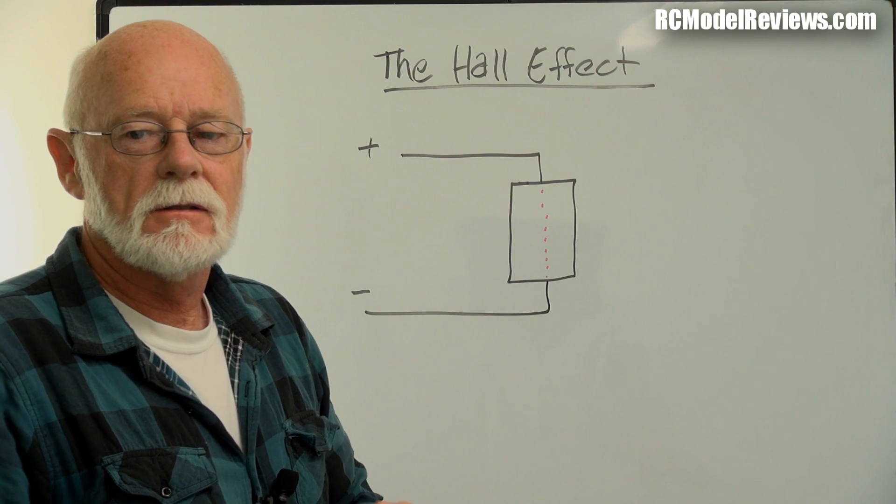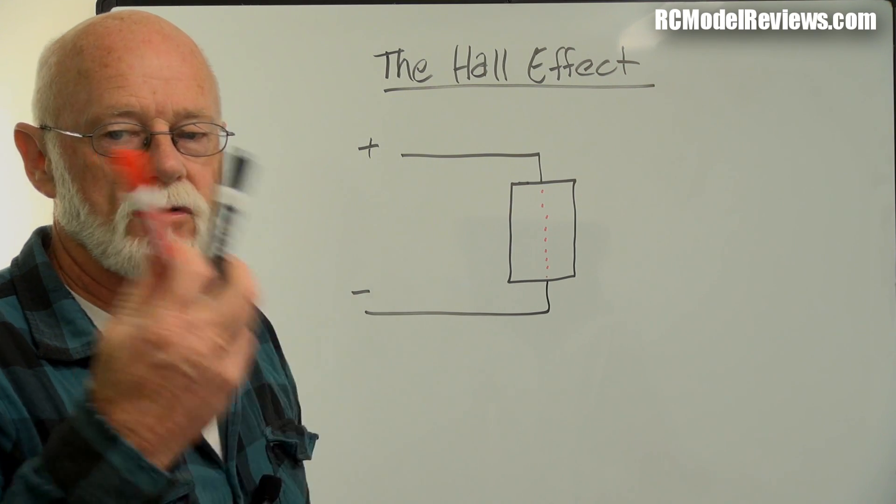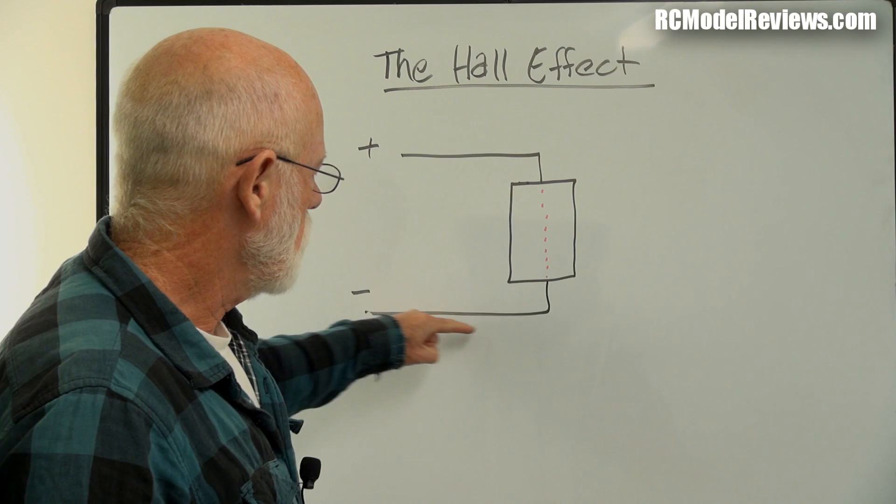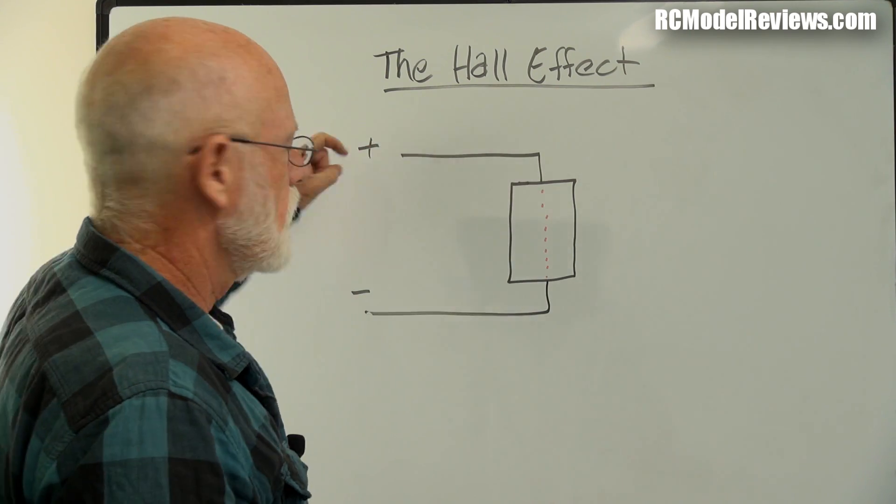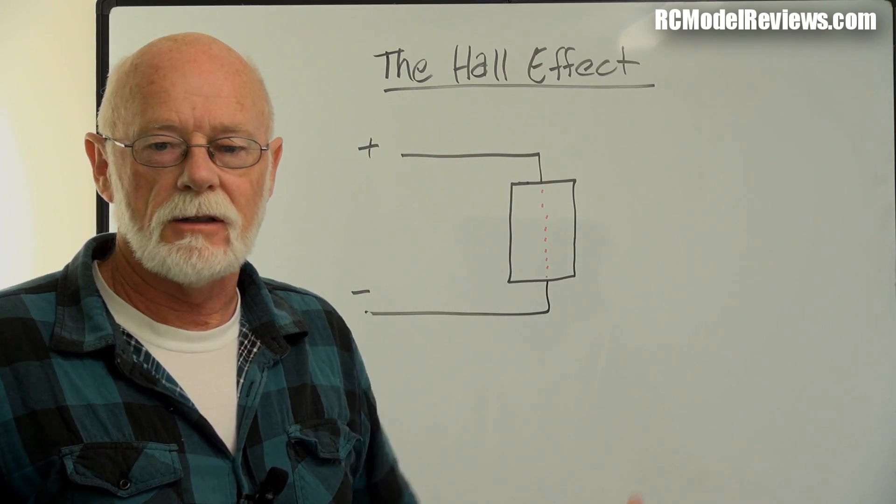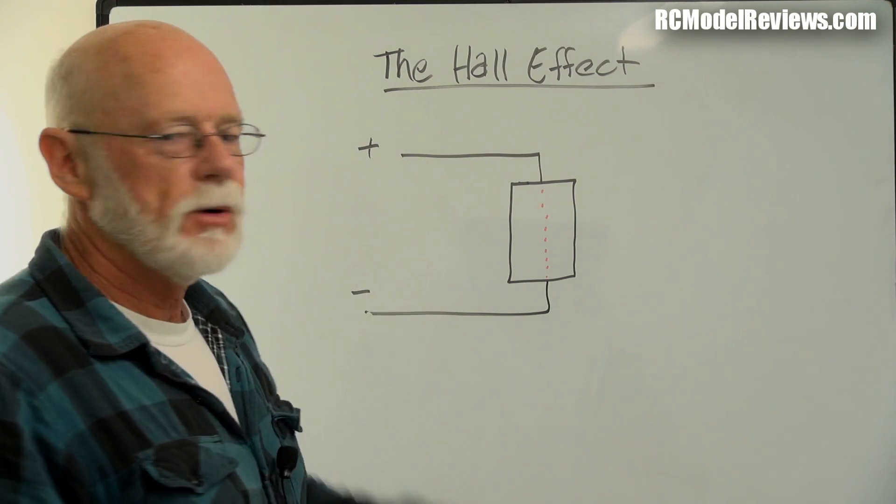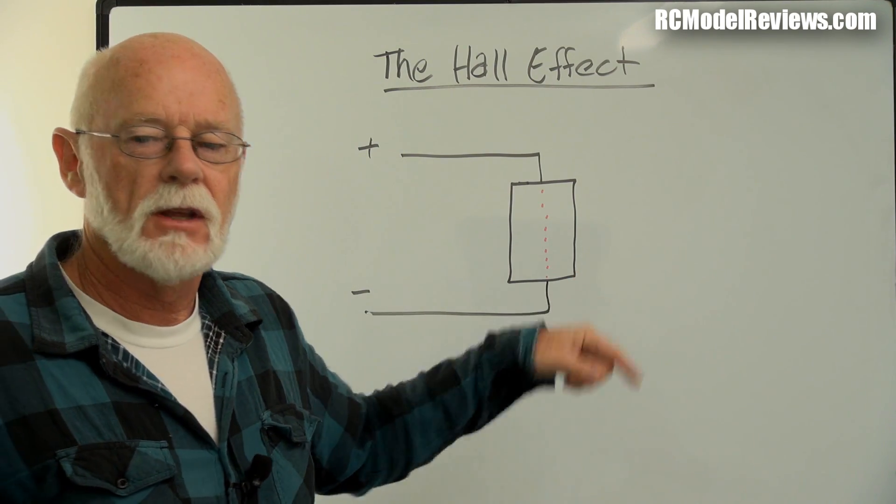Let's assume that the electrons are travelling through the conductor. There they are, the little red dots. They're not red actually, but I've used red. Little red dots, they travel along here, through there, back there. That's just a normal circuit conductor.